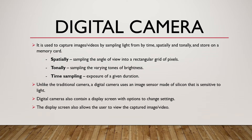Digital camera. It is used to capture images or videos by sampling light spatially, tonally, and over time, and stored on a memory card. Spatially means sampling the angle of view into a rectangular grid of pixels. Tonally means sampling the varying levels of brightness. Time sampling means the exposure of a given duration. Unlike the traditional camera, a digital camera uses an image sensor made of silicon that is sensitive to light. Digital cameras also contain a display screen to change settings and view captured images or videos.